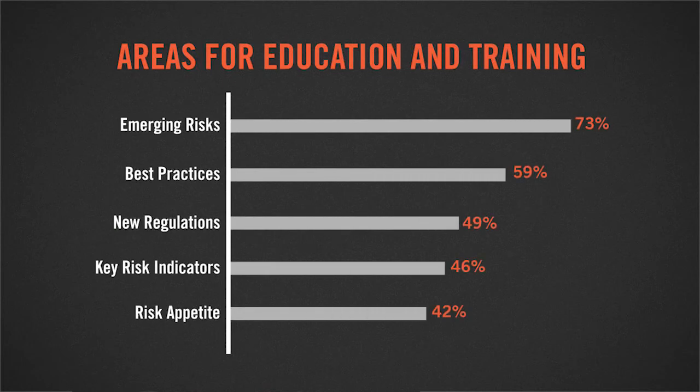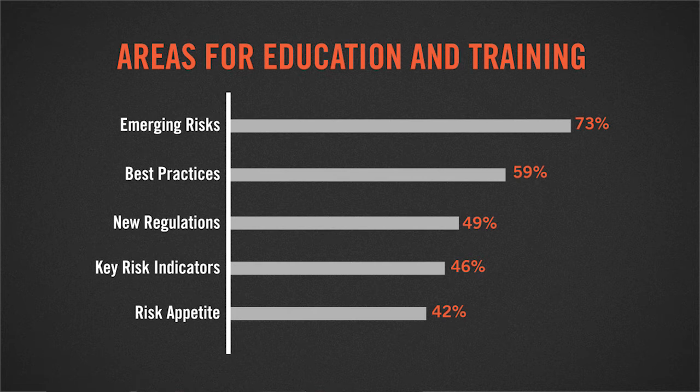The second groundbreaking finding is that 73% of respondents say their boards need a better understanding of emerging risks in order to be able to guide executive management to the next level of performance. So how can bank boards and executive management stay on top of the risks facing their bank? The survey identified several best practices to implement.